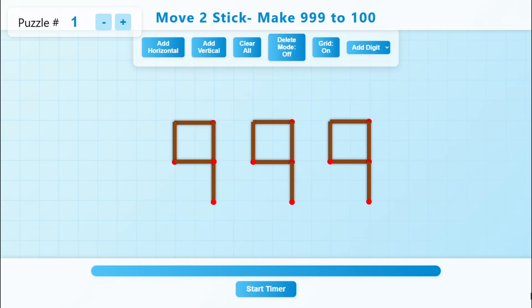Move 2 matchsticks to make 999 to 100. Can you solve this viral matchstick puzzle? In this puzzle, if you see there are 3 nines and you have to move 2 matchsticks to make 100.